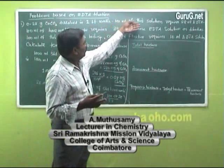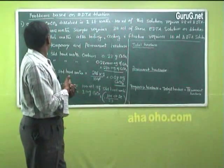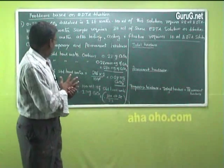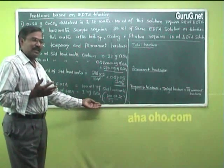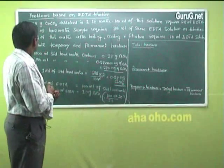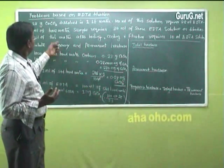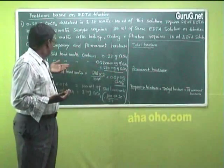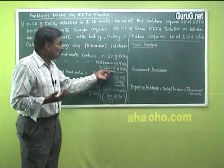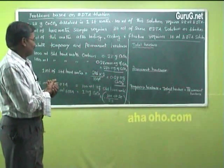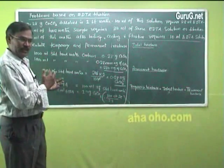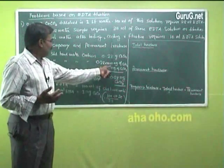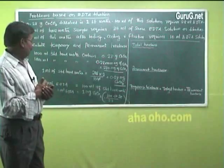100 ml of that standard hard water requires 28 ml of EDTA. From this, we can get how many milligrams of calcium carbonate 1 ml of EDTA equals. 1000 ml of standard hard water contains 280 milligrams of calcium carbonate. Therefore, 1 ml contains 0.28 milligrams of calcium carbonate.